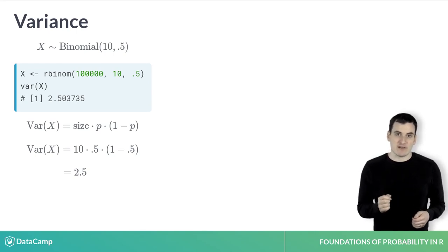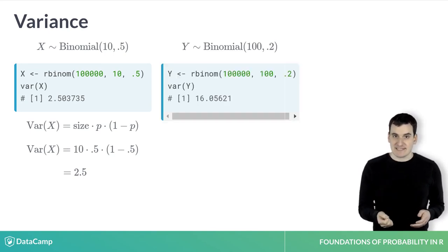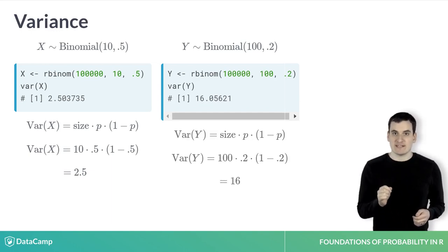We could try this with a second binomial distribution, with size 100 and probability 0.2, and we'd see that the variance is 16, the same value we'd get by multiplying 100 times 0.2 times 1 minus 0.2.